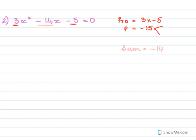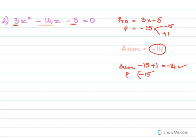So we need sum equal to minus 14. The factors would be minus 15 and plus 1. Let's check: minus 15 plus 1 gives minus 14, so the sum is right. And minus 15 into plus 1 is minus 15, so we have the product right too.